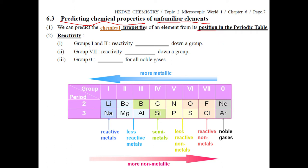For example, for Group 1 and Group 2 elements, you find the reactivity will increase down the group. And for Group 1 and Group 2, you know Group 1 is more reactive than Group 2.